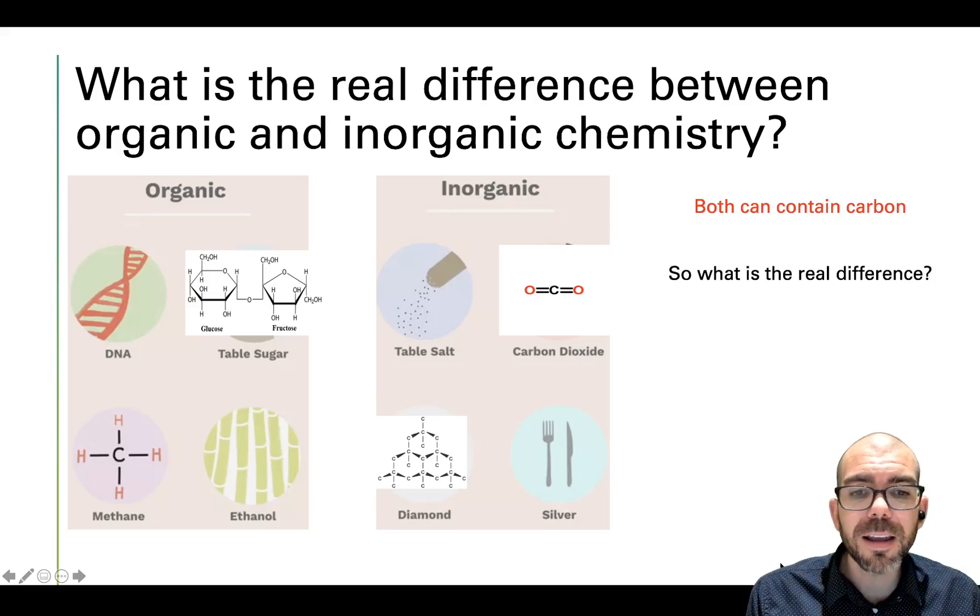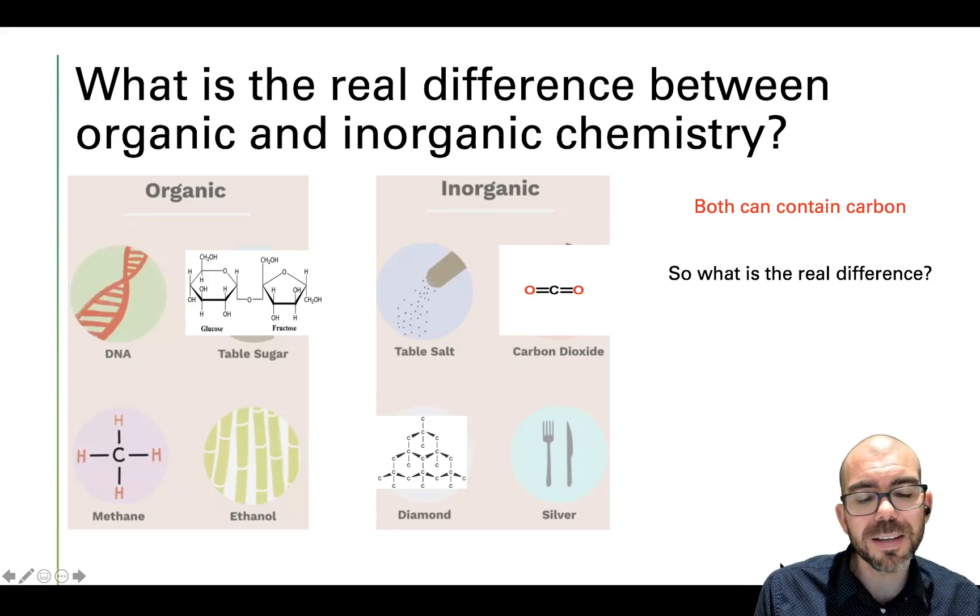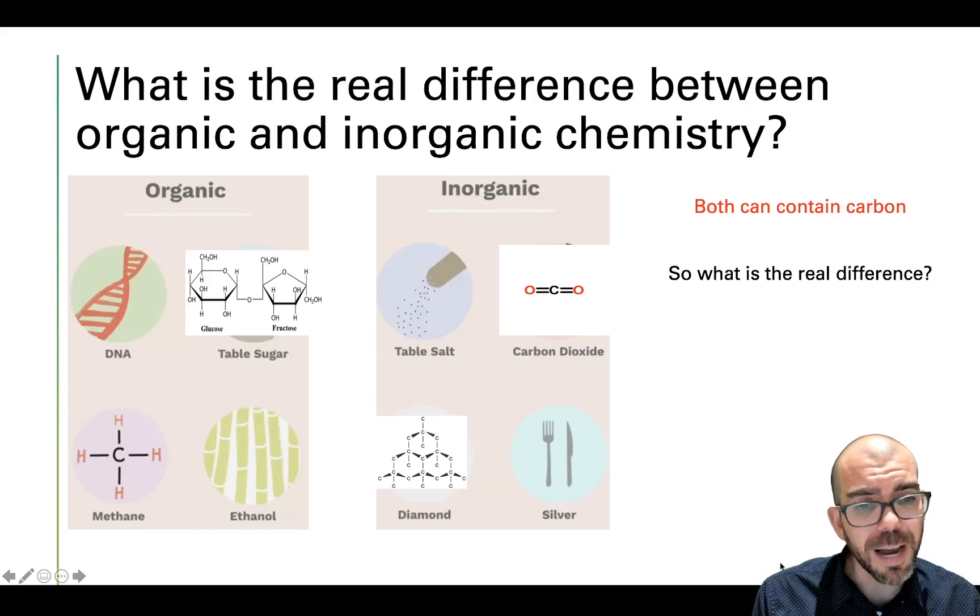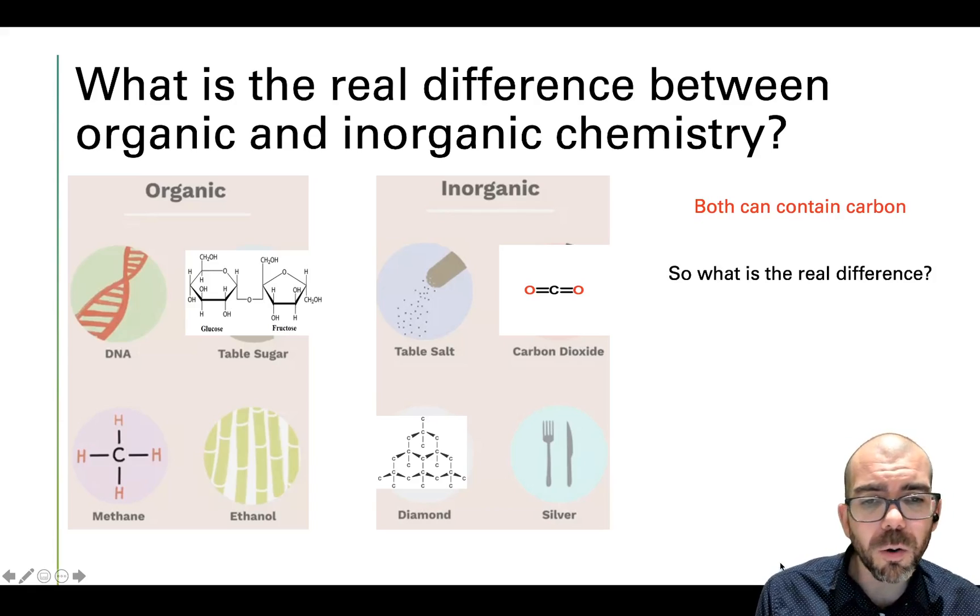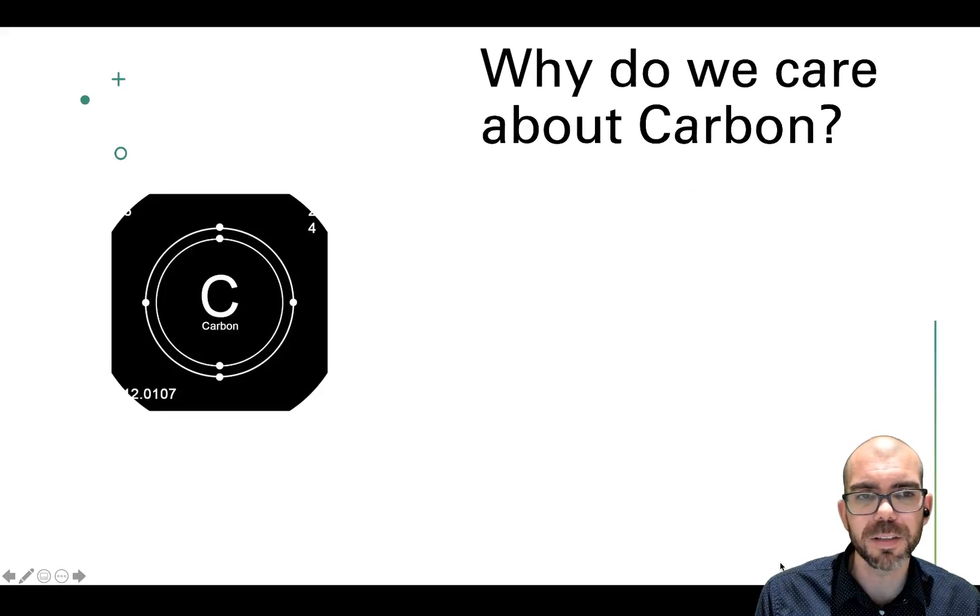To say that organic chemistry is just based in carbon like your textbook does is a little deceptive. Carbon dioxide is carbon, diamond is made of carbon, so is sugar. So what is the real difference? Hopefully you'll have some insight into that by the end of this lecture.